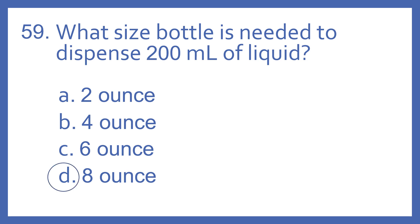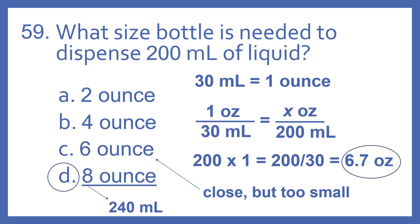And the answer is D, 8 oz. So there are 30 milliliters in 1 oz. So 1 oz per 30 milliliters equals X oz per 200 milliliters. 200 times 1 equals 200, then divided by 30 equals 6.7 oz.